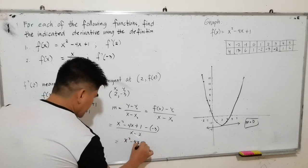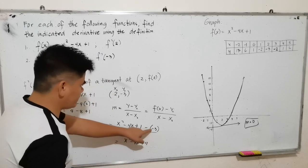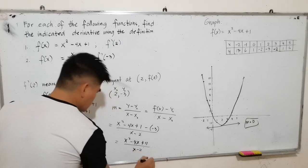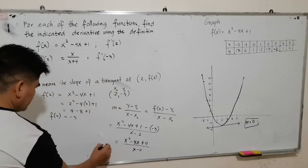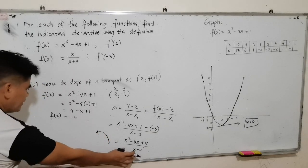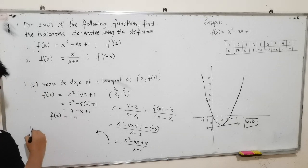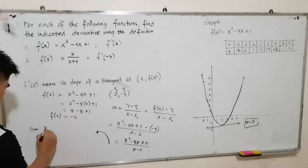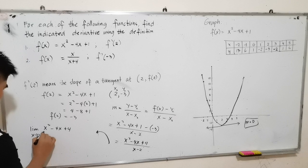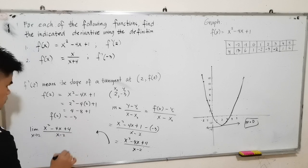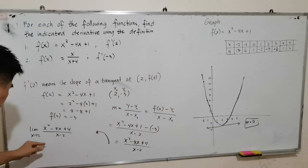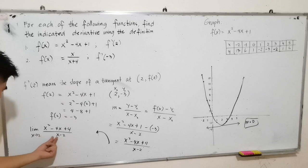That gives us x squared minus 4x plus 4 — because negative times negative is positive, so 1 plus 3 is 4 — all over x minus 2. Now we solve for the limit as x approaches 2 of x squared minus 4x plus 4 over x minus 2. If we substitute directly, the denominator becomes 2 minus 2 equals 0, so we apply factoring.